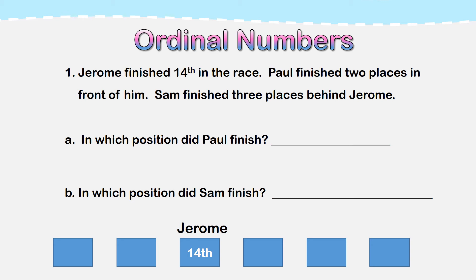Next I am going to make a plan. My plan is I will draw a picture of boxes to represent the different places. I have two boxes in front of Jerome — these stand for the two places in front of him. I also have three boxes behind Jerome — these stand for the three places behind him.